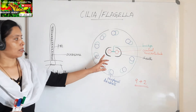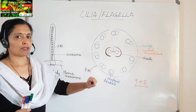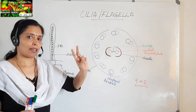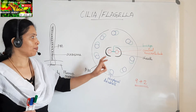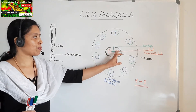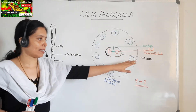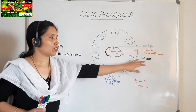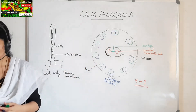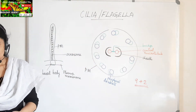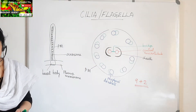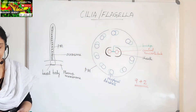The two central microtubules are arranged singly. They are enclosed within a sheath, and the two central microtubules are attached to each other by a bridge.